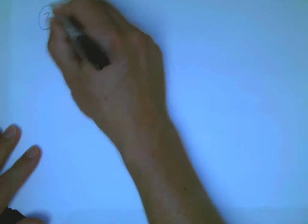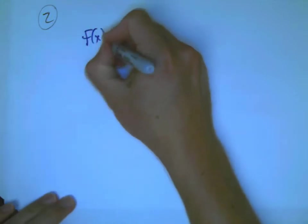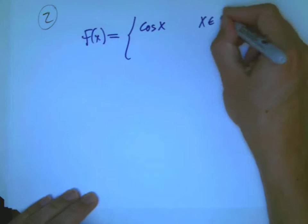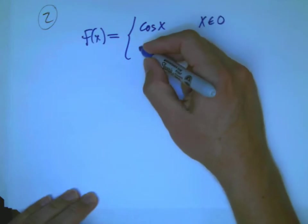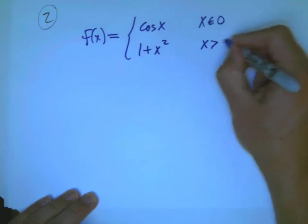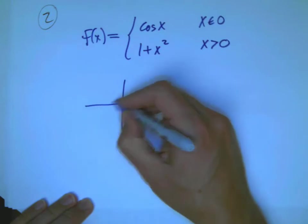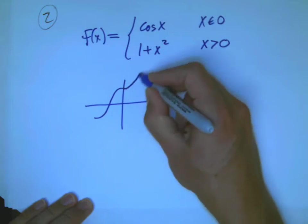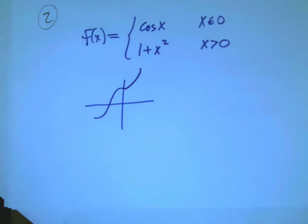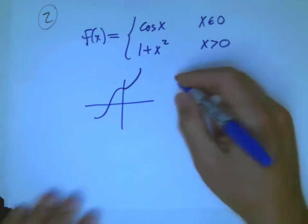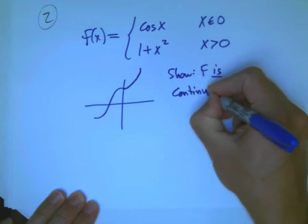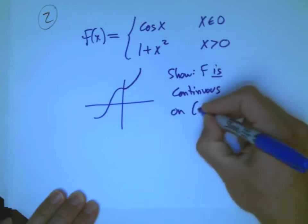Okay, so let's do example number two. Let's change colors. Example number two, let's say f of x equals cosine x for x less than or equal to zero, and let's do something a little more interesting. Let's say one plus x squared for x greater than zero. Let's sketch that. Cosine looks like this. One plus x squared looks like a parabola shifted up. Hey, that looks nice. Looks like it actually joins up into a reasonably nice function.